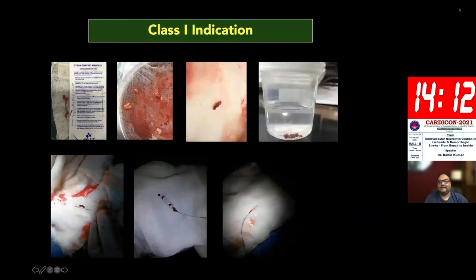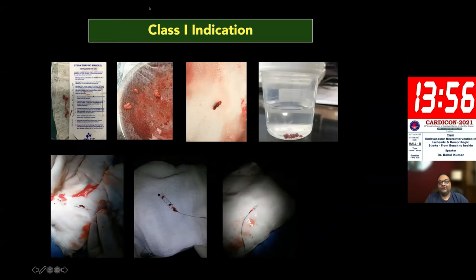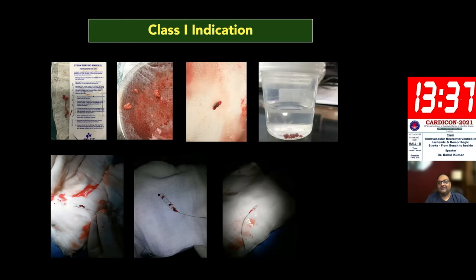Many interventions done for extracranial arteries cannot be practiced in the same way in intracranial arteries. 2015 was a year when large trials proved that mechanical thrombectomy for acute intracranial occlusion saves lives, and it became a class one indication. The clots we extract from the brain of ischemic stroke patients can measure up to five to six centimeters. Without mechanical reperfusion in large vessel occlusions, the chances of these clots opening with IV thrombolysis alone are next to zero.